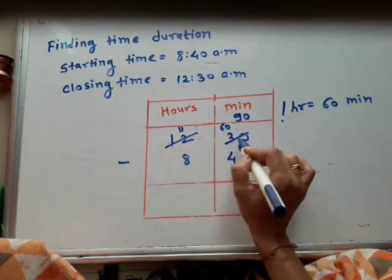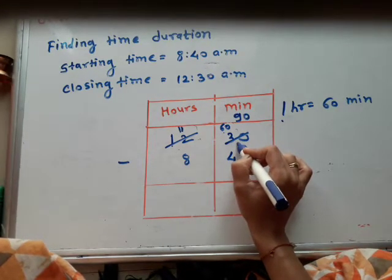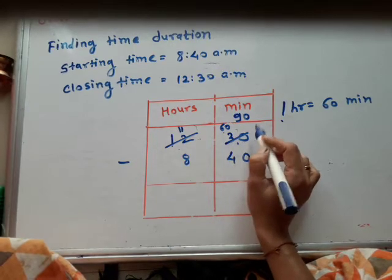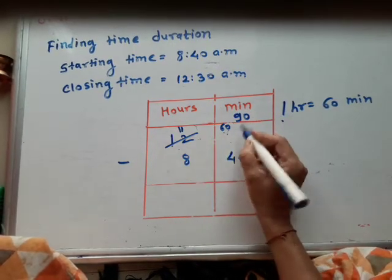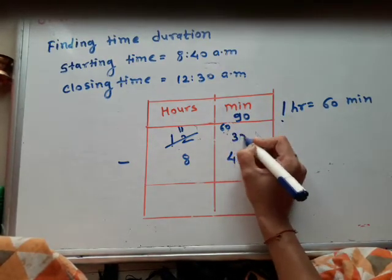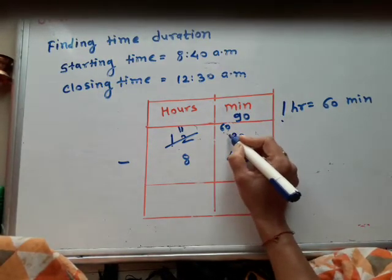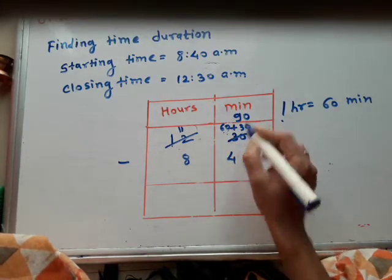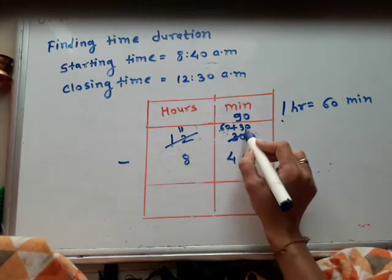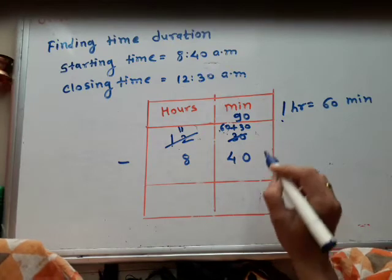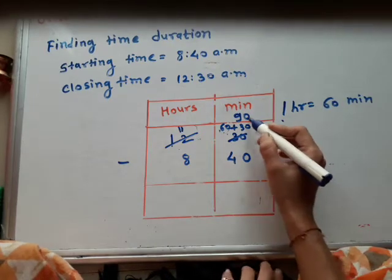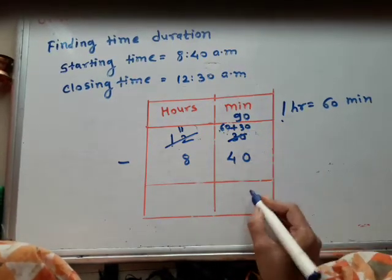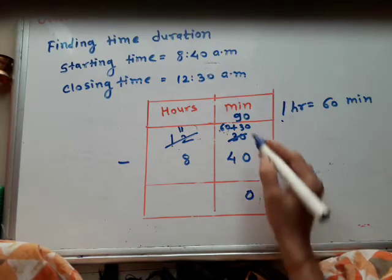We borrow 1 hour, which means 60 minutes. And this 60 plus the existing 30 minutes — so we write here: 60 plus 30. We get 90 minutes. And 90 minutes minus 40 minutes.